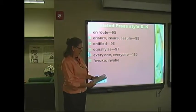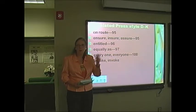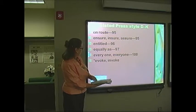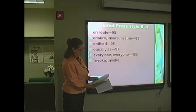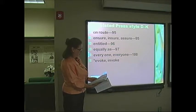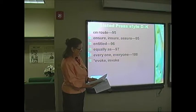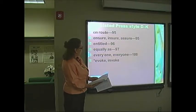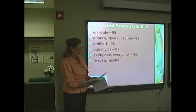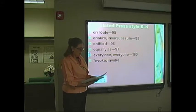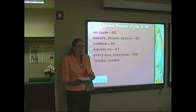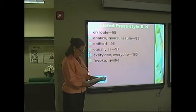On the next page, left-hand column: equally as is redundant — just use one or the other. He's equally smart. He's as smart. Then we have everyone. On page 100, right-hand column, we have every one as two words and everyone as one word. We use the two-word version when we mean every individual item; everyone as one word is the pronoun. Right under that, would you add evoke and invoke? Evoke is the emotion you draw out from somebody; invoke is something that you are giving.